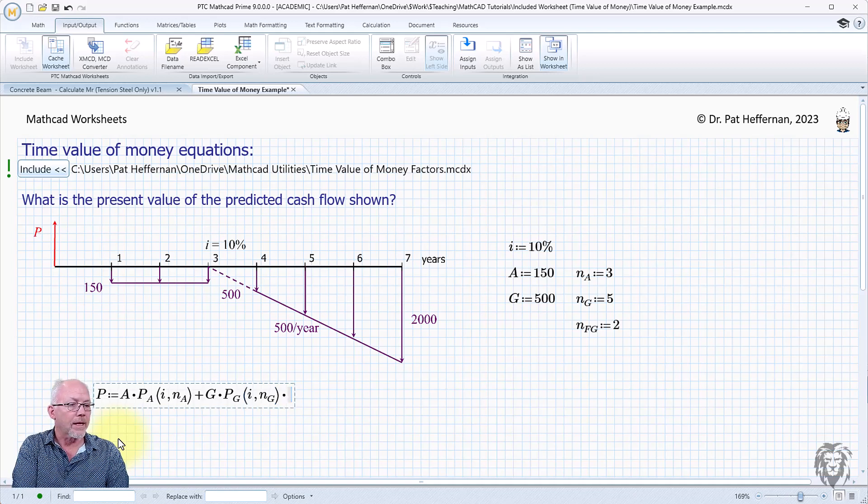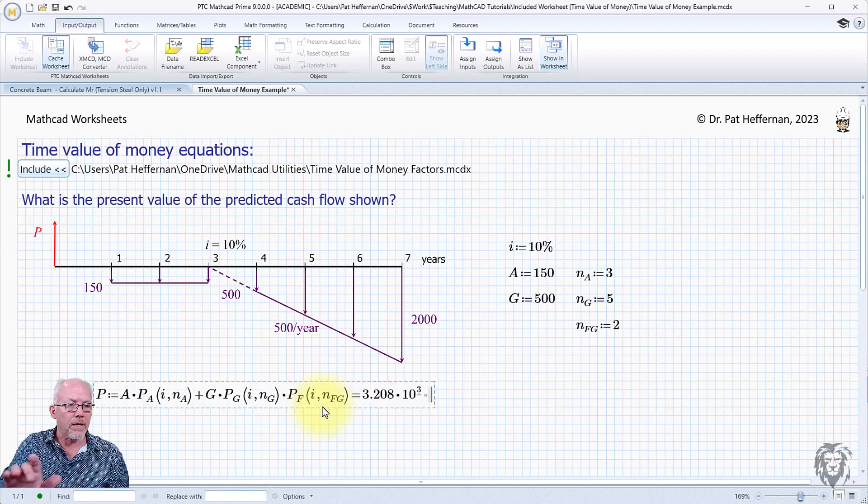And of course, that only brings it back to year two. So we then have to bring it back to the present day. So we multiply that again by the future value factor. And if I've got that all right, I hit the equal sign. And we come up with a value.